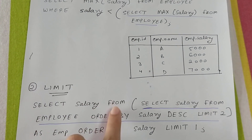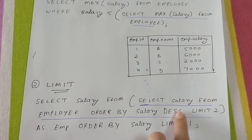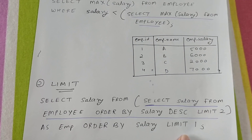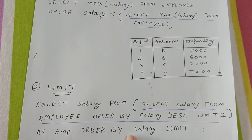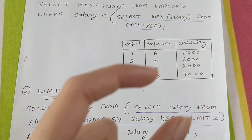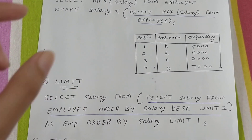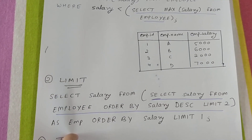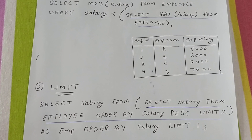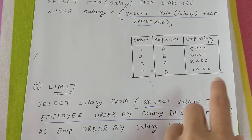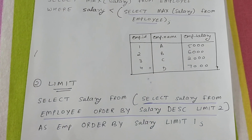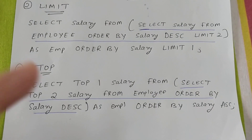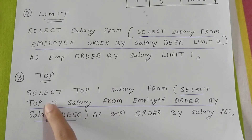The outer query selects salary from this inner result (7000 and 6000) and applies ORDER BY salary in ascending order — smaller to bigger — so 6000 comes before 7000. Then LIMIT 1 returns only the first value, which is 6000. That is our answer. The third method uses TOP.